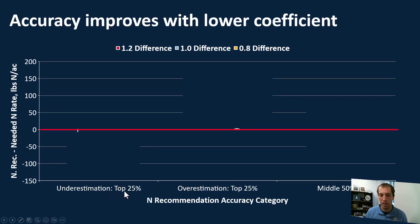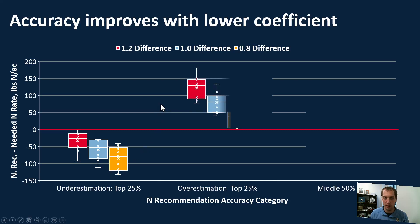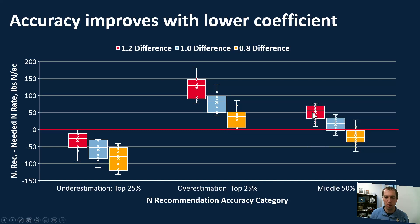The three groups are: the bottom 25% where we tend to underestimate, the top 25% where we tend to overestimate, and the middle 50% of the data. For the underestimating group, changing the coefficient from 1.2 to 1.0 to 0.8 takes us further from zero — many of these sites were under drought conditions, making the system less nitrogen-efficient. For the overestimating group, going from 1.2 to 1.0 to 0.8 brings us progressively closer to zero. For the middle 50%, going from 1.2 to 1.0 to 0.8 also moves closer to zero, though 0.8 actually goes slightly below.